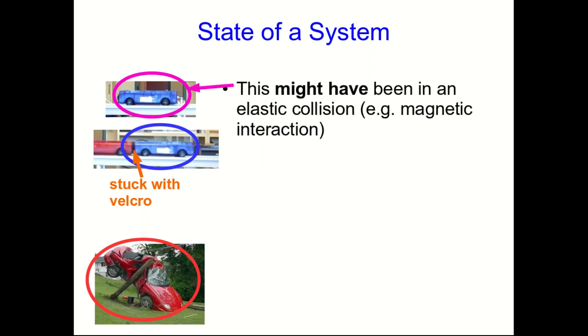So here's the point. This first cart might have been in an elastic collision, say using the magnets, but we can't tell because that collision has left this cart unchanged. Now, I'll tell you, in fact, I know that just before this picture, this cart had been in a collision with another cart, but there's no way of telling from the picture.